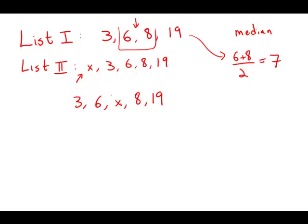And in fact, the only way that this list is going to have a median of 7 is if x has a value of 7. And so x equals 7, this is answer choice B.